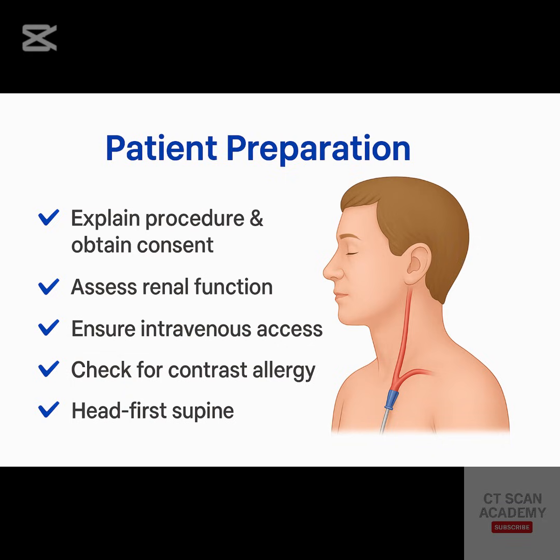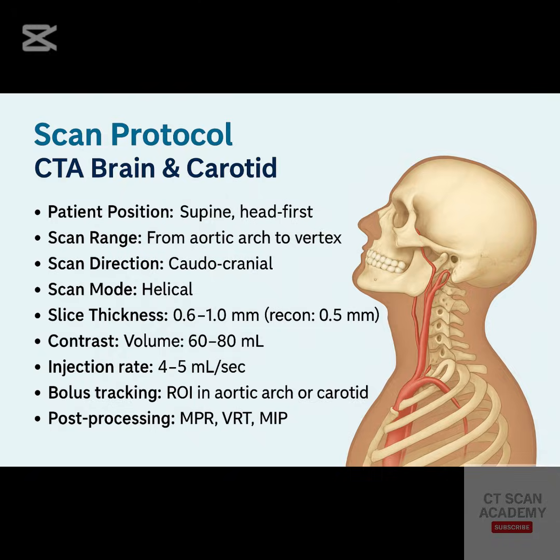Patient preparation begins with positioning. The patient should lie head first and supine, with arms at their sides. Explain the procedure clearly to reduce patient movement during scanning. Check for any contrast allergies and assess renal function before injection. The scan range is caudocranial, starting from the aortic arch up to the vertex.